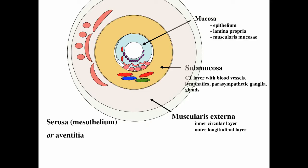Recall the general organization of the GI tract: the mucosa — here I've drawn just diagrammatically to highlight the epithelium, the lamina propria, connective tissue, blood vessels, lymphatics, muscularis mucosa. I have tried to highlight the two layers of smooth muscle — inner circular and outer longitudinal — the submucosa, a layer of connective tissue, the muscularis externa with its smooth muscle layers, and the serosa or adventitia.